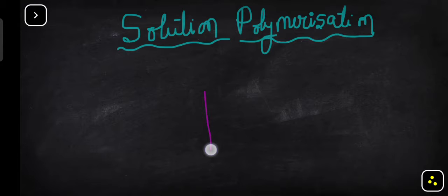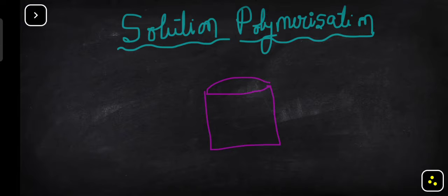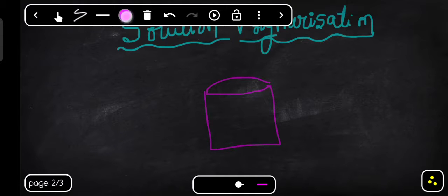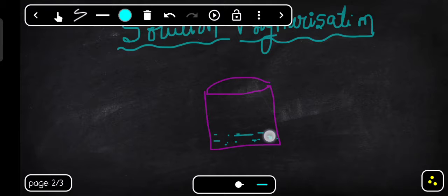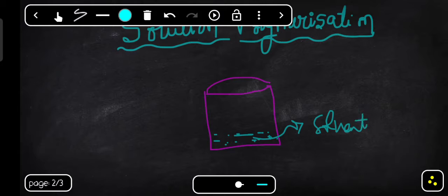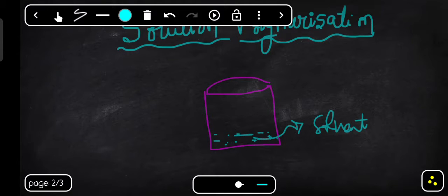Imagine there is a container, and in this container you will be taking a solvent. In the previous case of bulk polymerization there was no use of solvent — only the monomer and the initiator. The key difference here is the use of solvent. Remember, whatever solvent you take must be inert — it should not react with the monomer. It is an inert organic solvent.